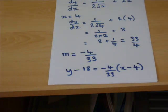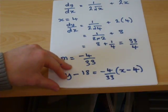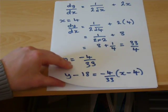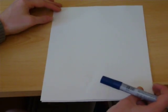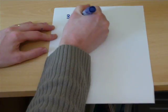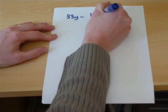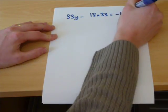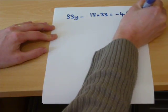So, I will begin by multiplying up by 33. And from there, we can rearrange to get a new equation. So, 33y minus 18 times 33 equals minus 4(x minus 4).